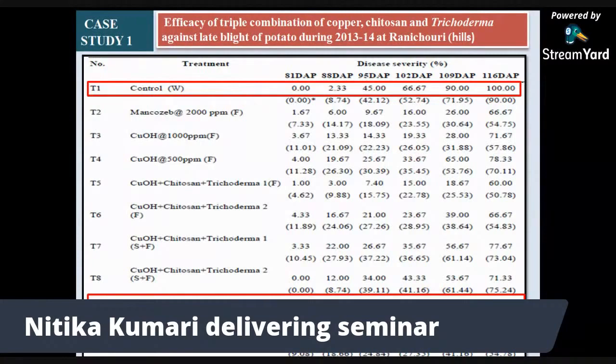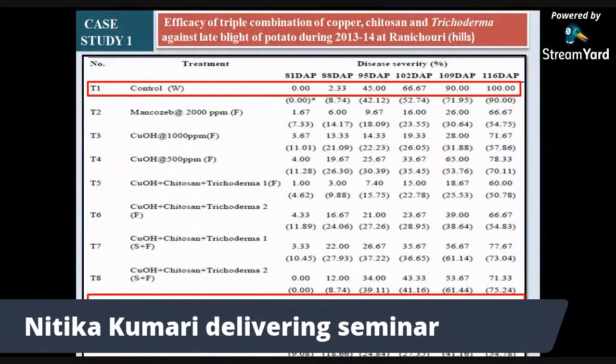Under a case study, it was observed that when Chitosan was applied as a triple combination with copper, Chitosan, and Trichoderma, the disease severity was least as compared to the control. The table also indicates that single products as well as dual combinations were comparatively less effective than the triple combination, where disease severity was comparatively higher.